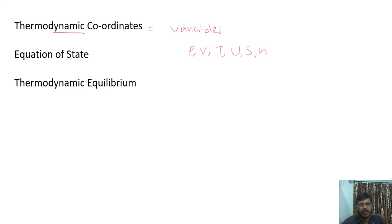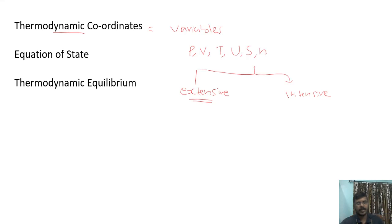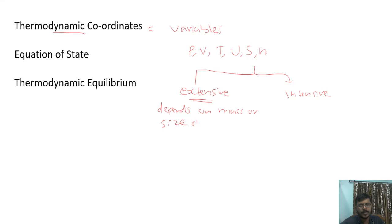Thermodynamic variables can be classified into two types: extensive variables and intensive variables. Extensive variables are those variables which depend on the mass or size of the substance present in the system.